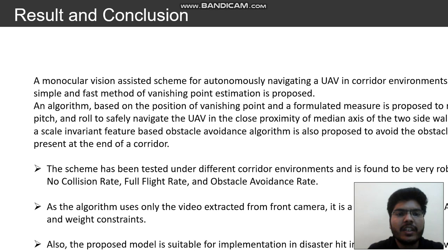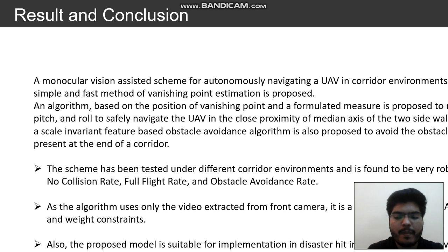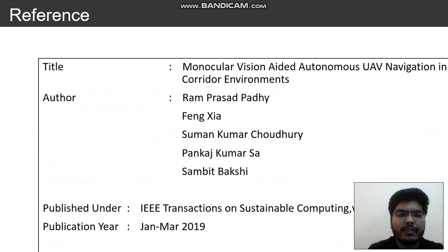The proposed vision-assisted scheme for autonomously navigating a UAV in a corridor environment achieves a success rate of 70 to 80 percent, as demonstrated in this paper. The scheme has been tested under different corridor environments and found to be very robust in terms of no-collision rate, full-flight rate, and obstacle avoidance rate. Since the algorithm uses only video from the front camera, it is a good candidate for UAVs with power and weight constraints, and can be used in environments where human intervention is not possible. This paper was published in 2019 under IEEE Transactions on Sustainable Computing, volume 4, number 1.